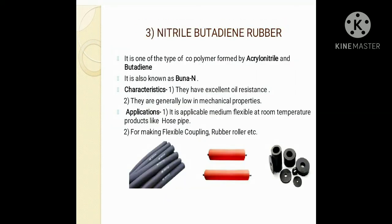The third synthetic rubber is nitrile butadiene rubber. It is a copolymer formed from acrylonitrile and butadiene, and is also known as BUNA-N. This material shows excellent resilience, meaning it has the capacity to absorb different types of energy. Due to better resilience, this material also has a better amount of flexibility.